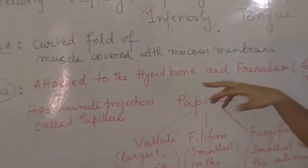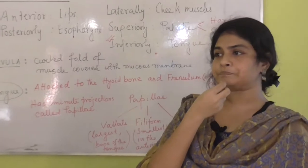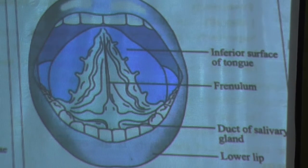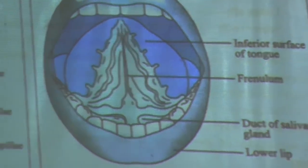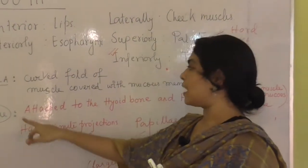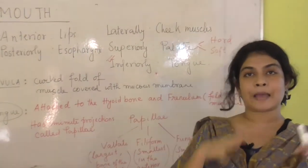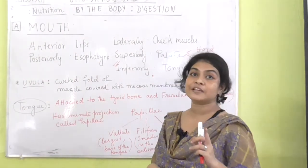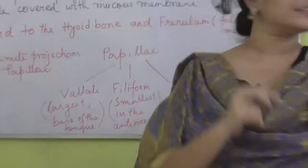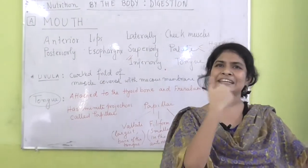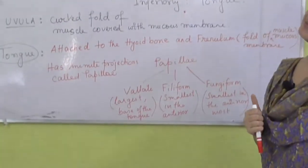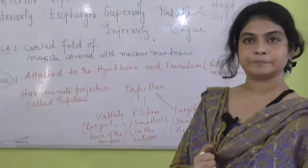The tongue has various minute projections called papillae, which are of three types. The vallate papillae are the largest, present at the base of the tongue. The filiform papillae are the smallest and are present just behind the anterior-most part. The fungiform papillae are the smallest and are present in the anterior part of the tongue.